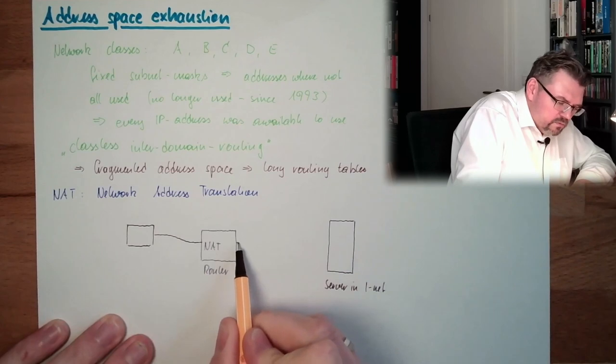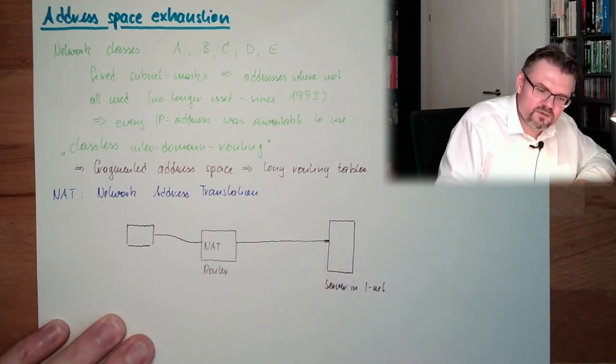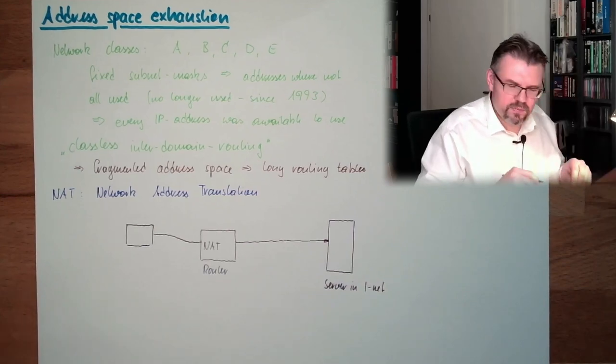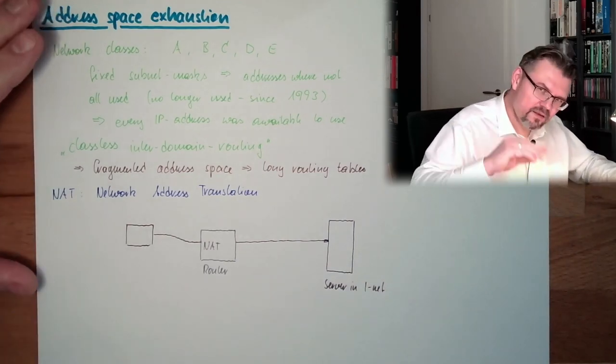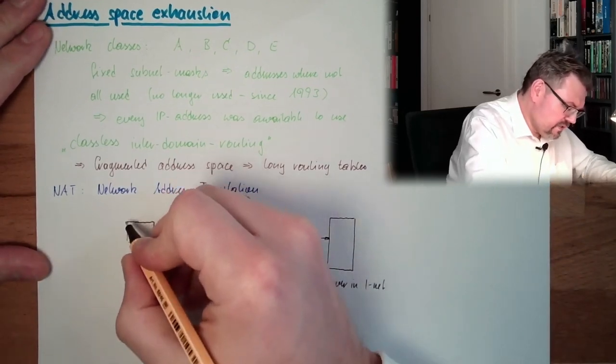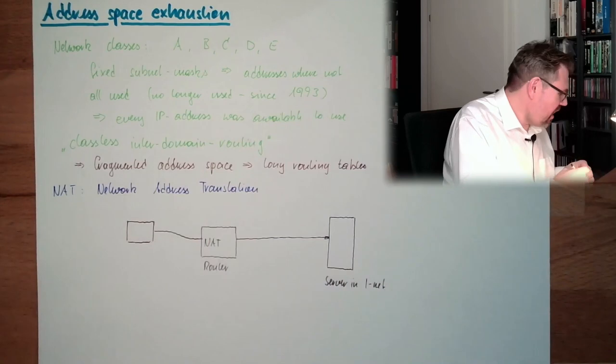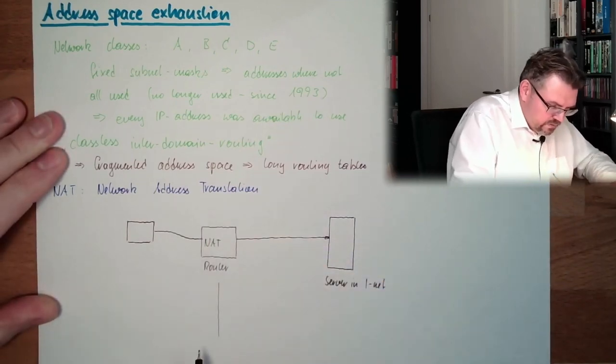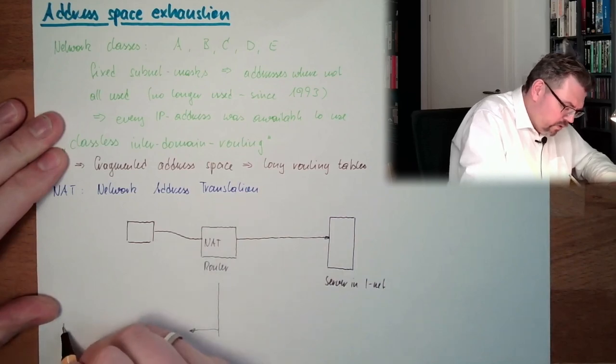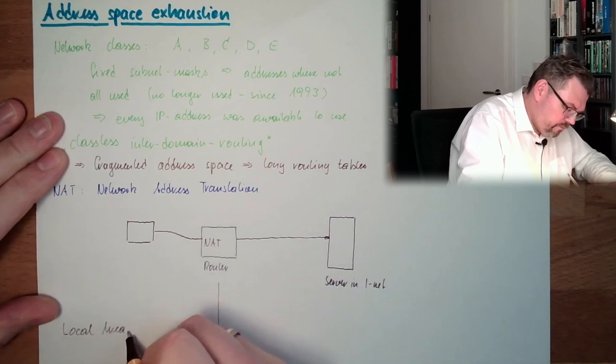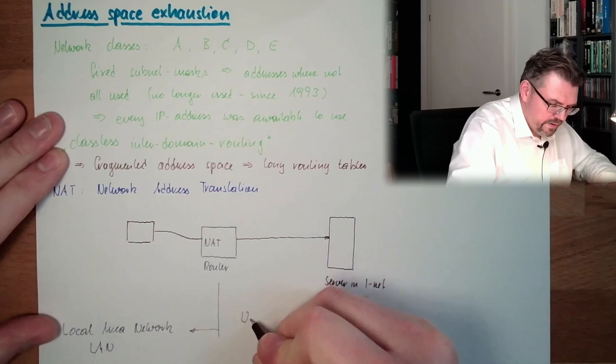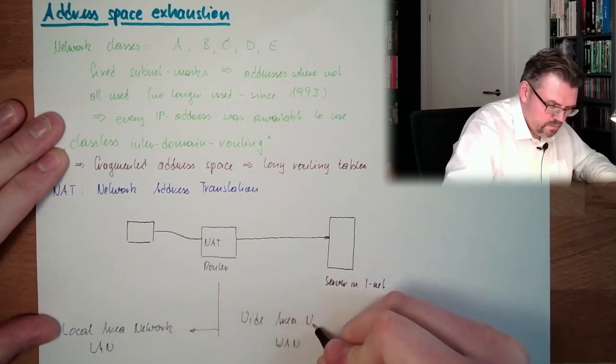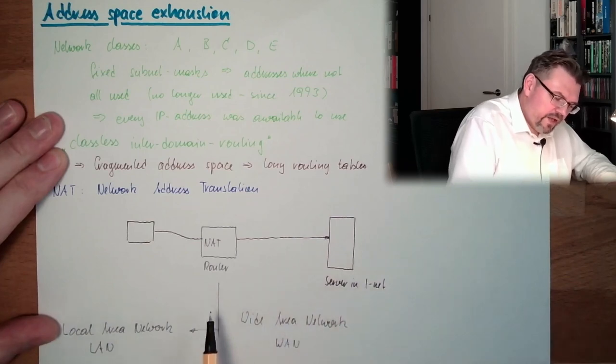Server in internet. And we want to connect to this server. We know the IP address of this server. Actually, we are typing in www dot whatever, behind these names are IP addresses. I will explain in a future video. So we have in our local network, on this side we have the local area network, and here we have the WAN, wide area network. And our connection point is our router.